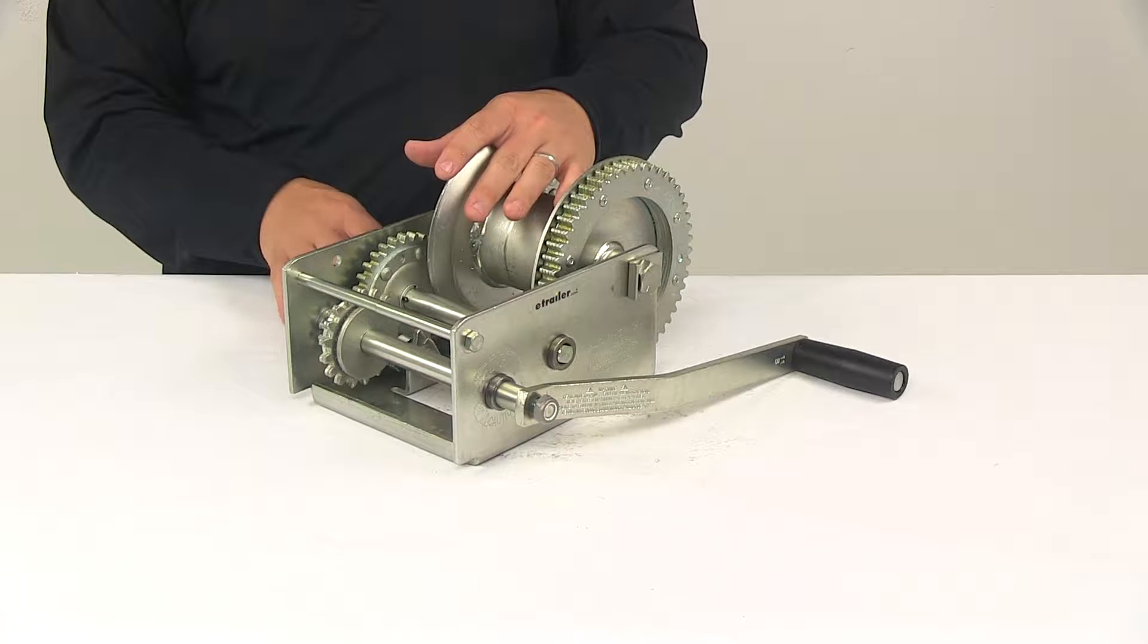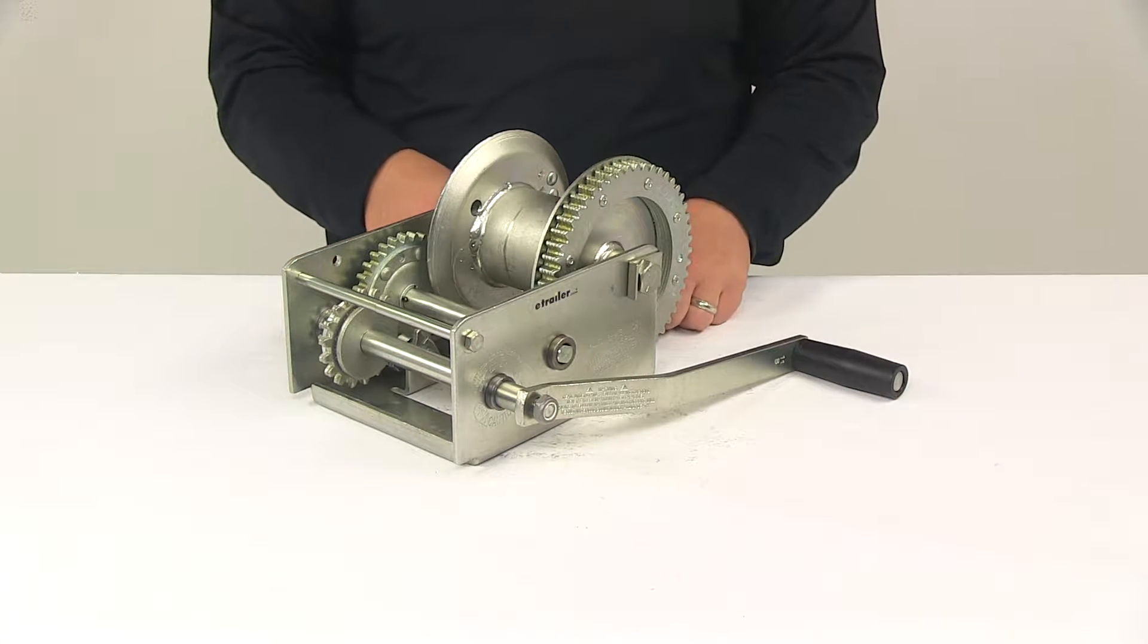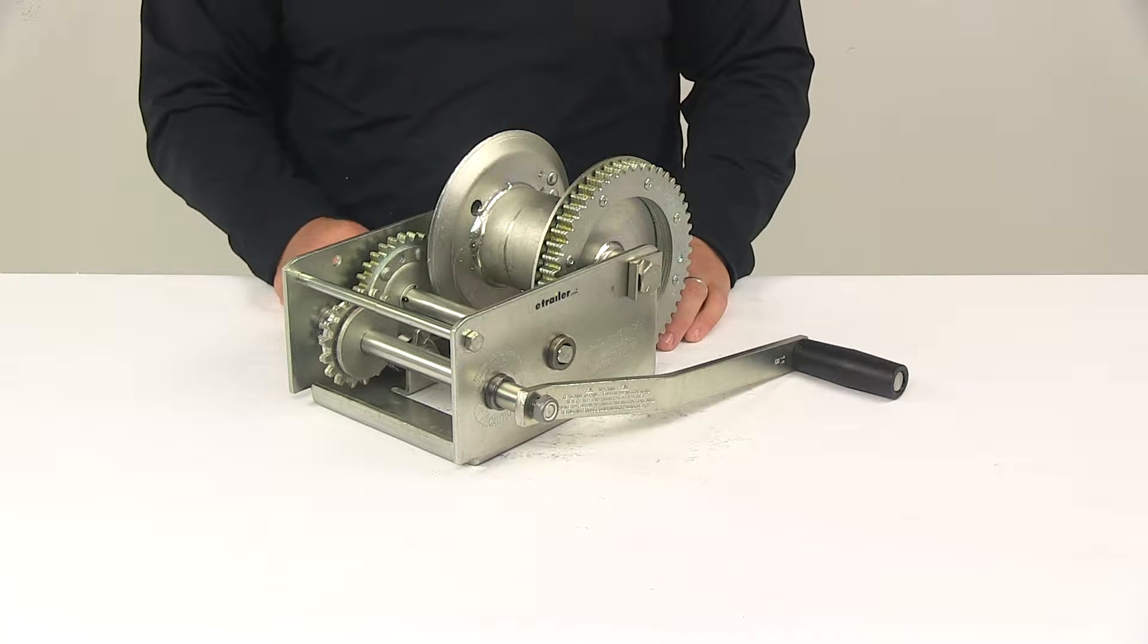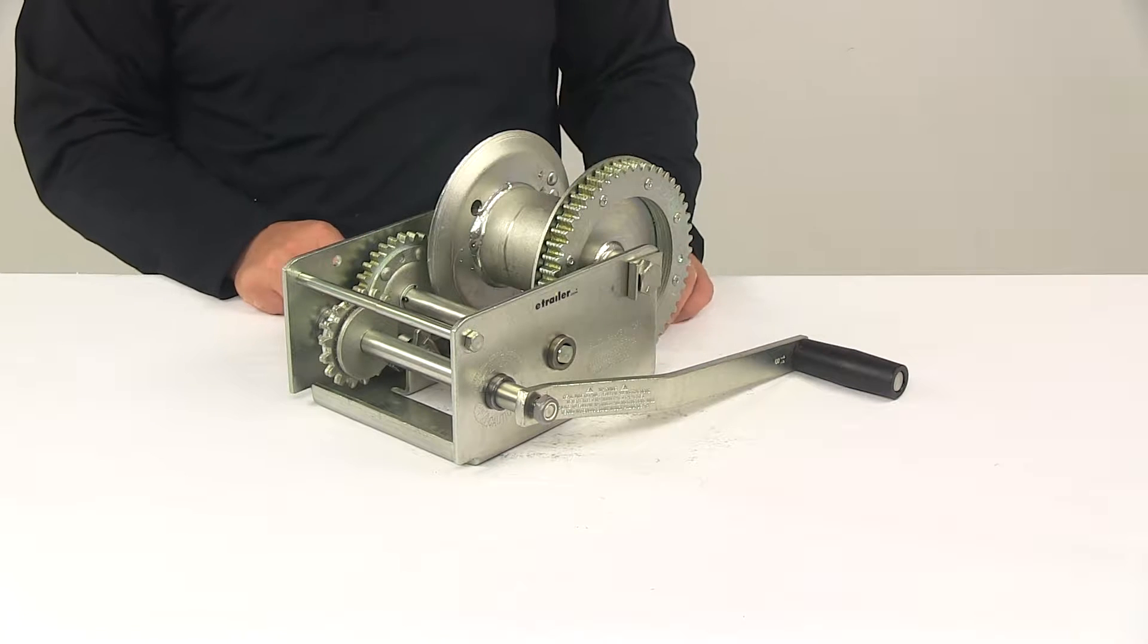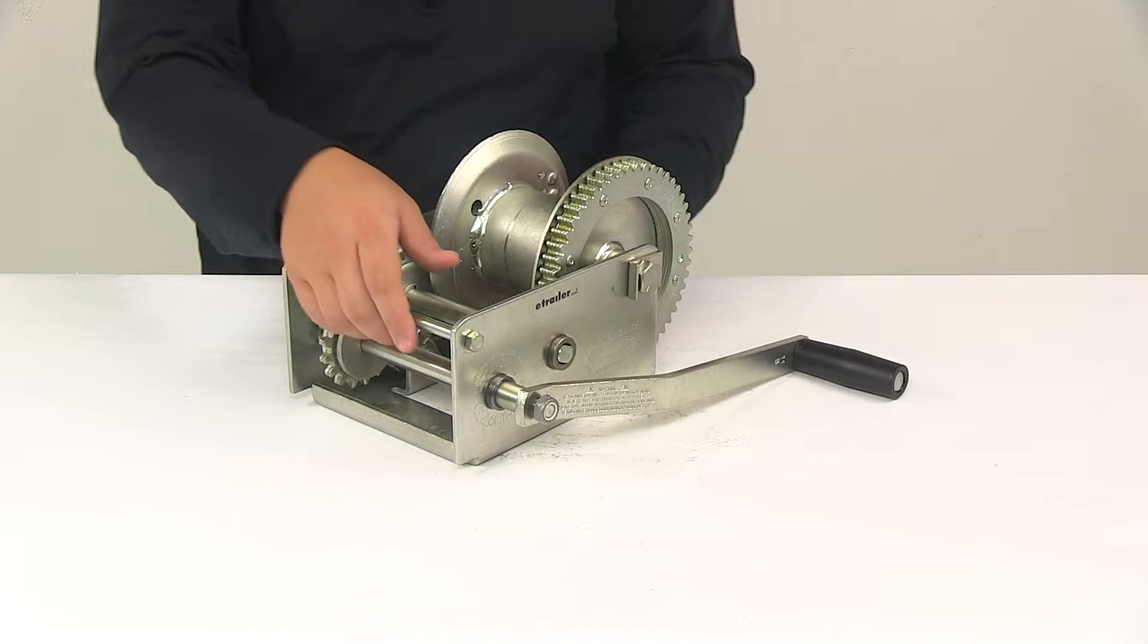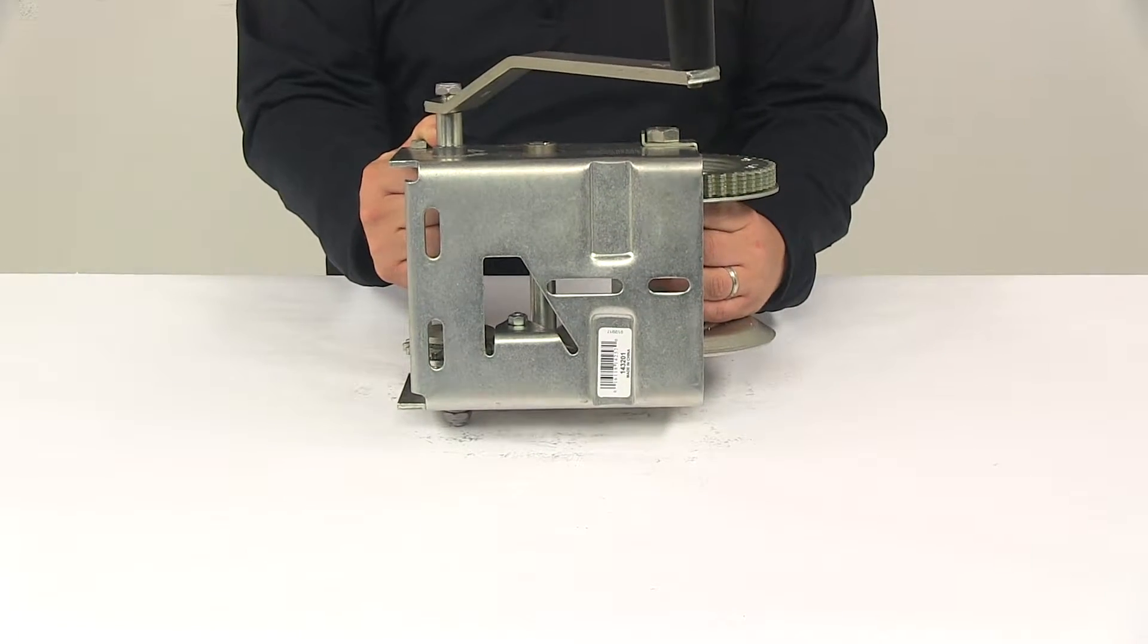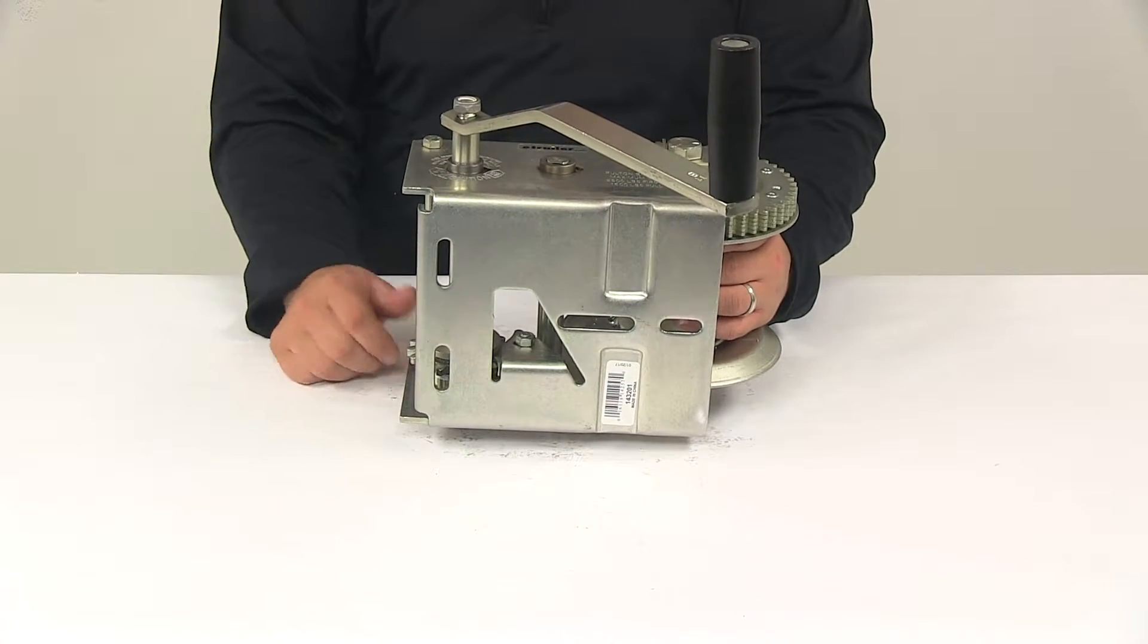The winch needs to be bolted to a suitable mounting area. The detailed installation instructions indicate that you need to use at least three grade five, three eighth inch diameter bolts. Mounting hardware is not included, so that will need to be provided separately. On the bottom, it offers multiple mounting slots to accommodate a wide variety of mounting applications.